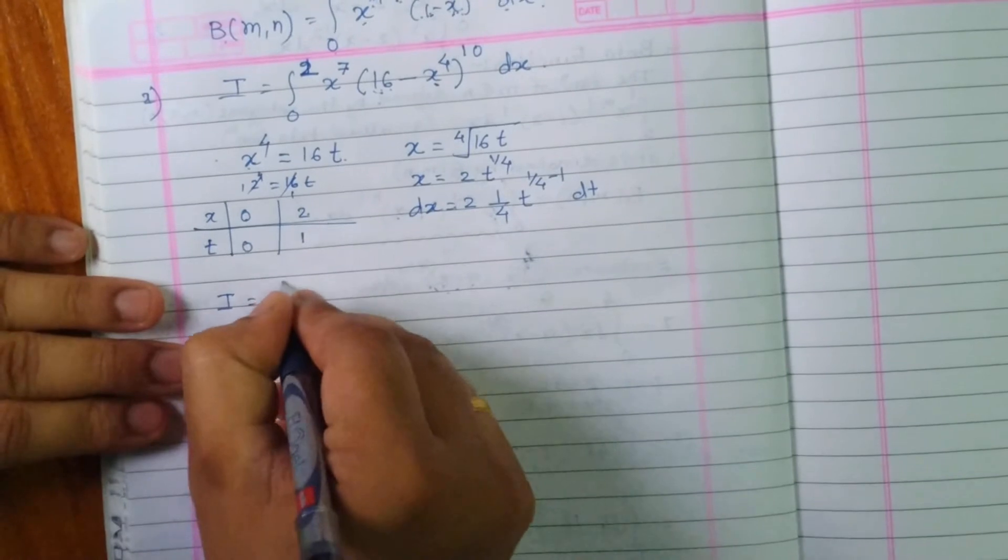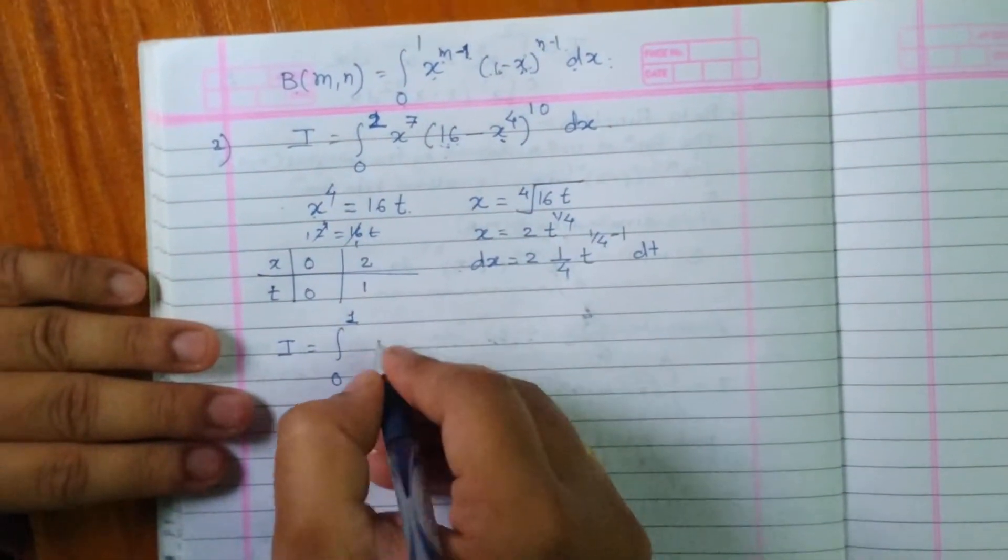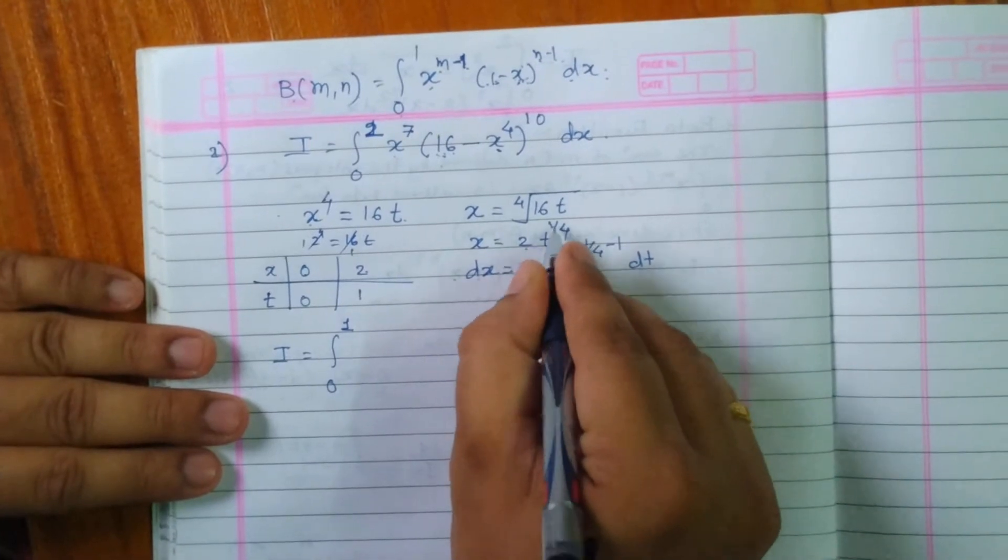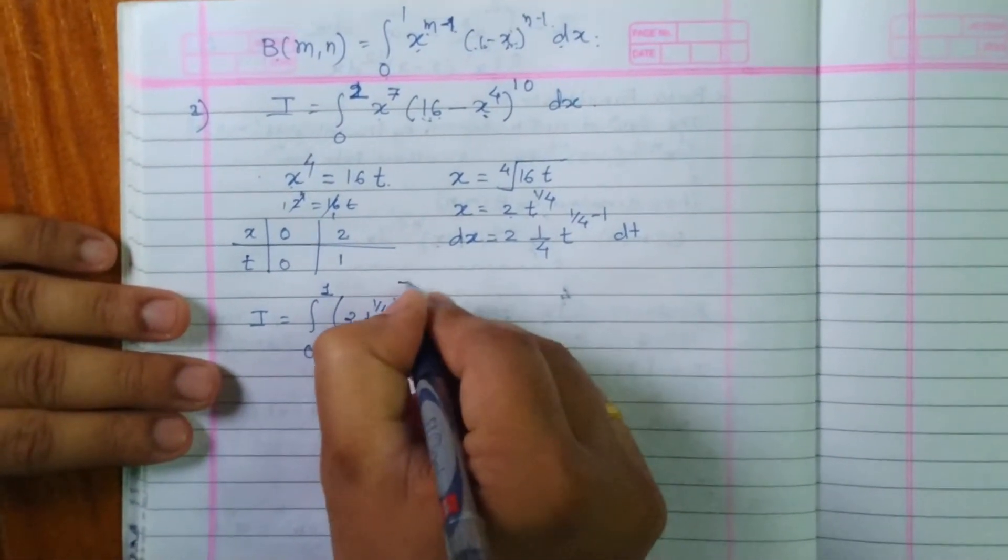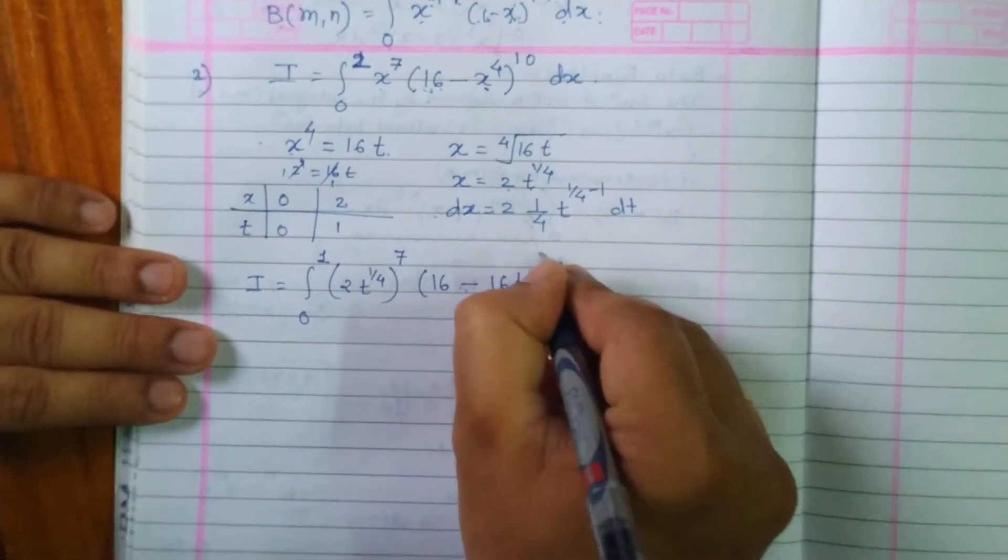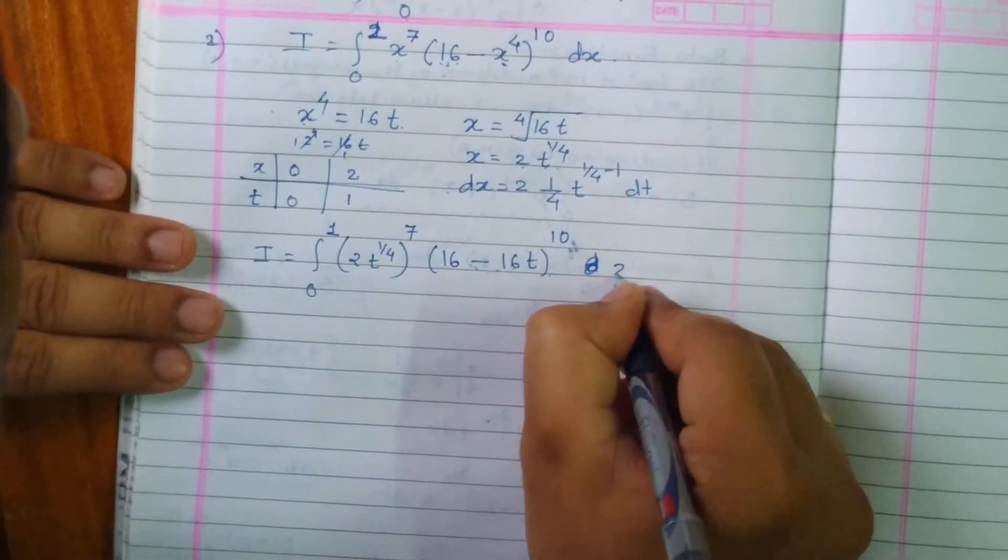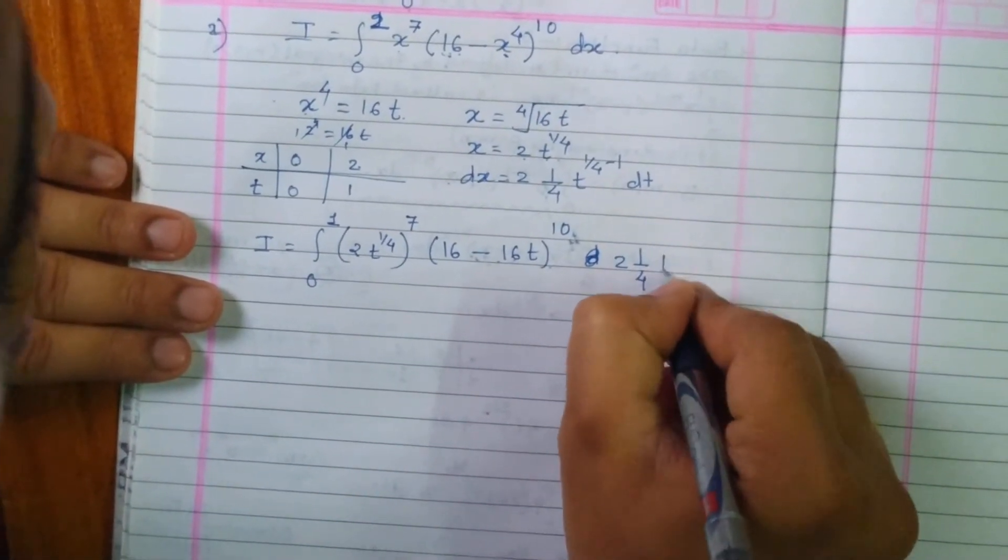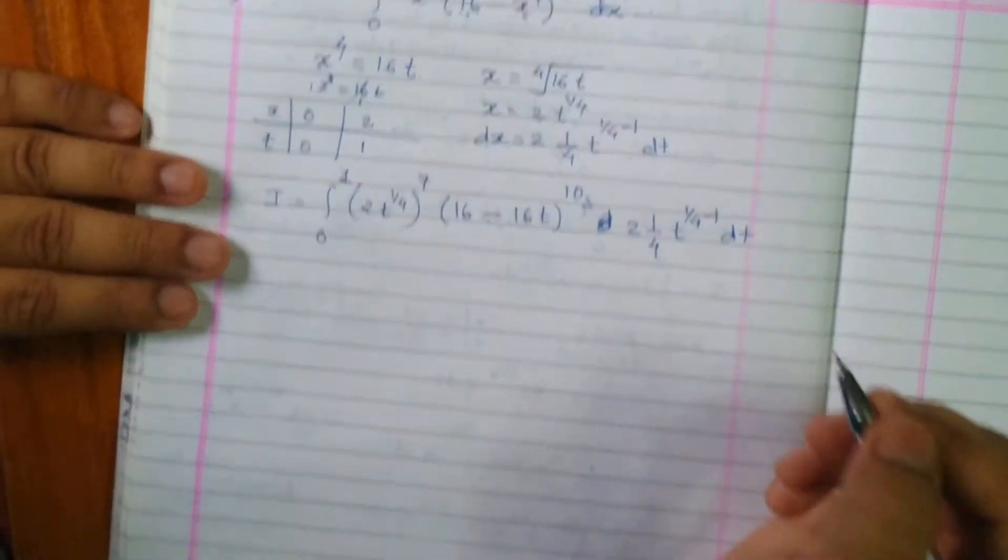So my integral I becomes integration from 0 to 1, x raised to 7, but x is replaced by 2 times t raised to 1 by 4, so that's 2t raised to 1 by 4, all raised to 7, times 16 minus 16t raised to 10, and dx is replaced by 2 times 1 by 4, t raised to 1 by 4 minus 1, dt.